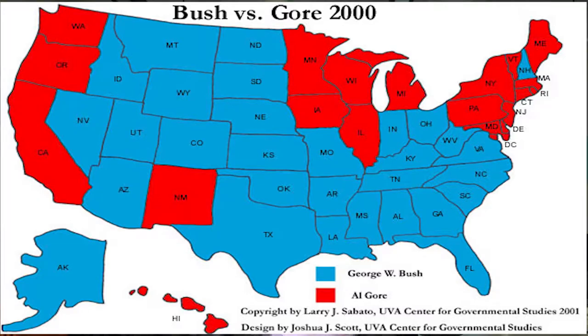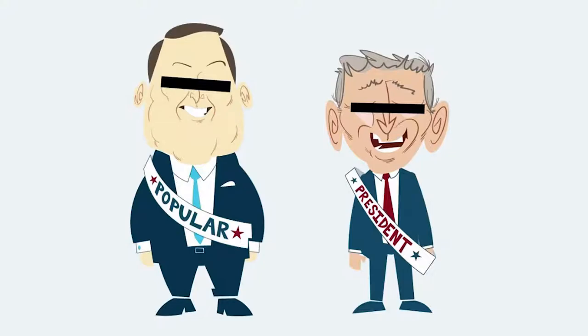This is called faithless voters, and there are a dozen states that prevent this from even happening. All 50 states abide by this system, with the exceptions of Maine and Nebraska, which use a congressional district method where some electoral votes are awarded through their districts.